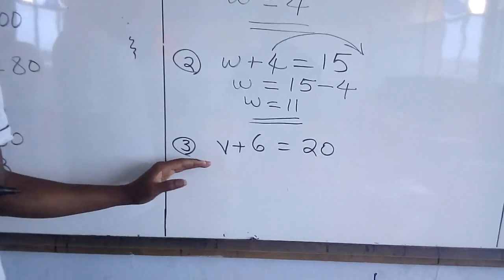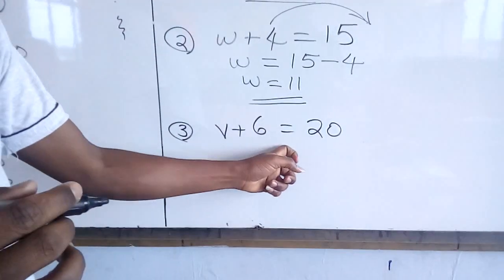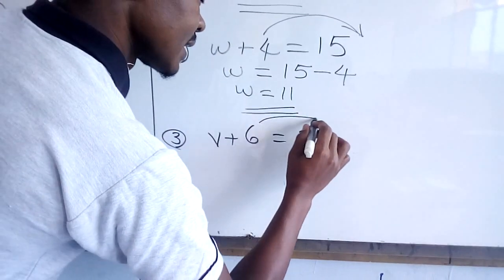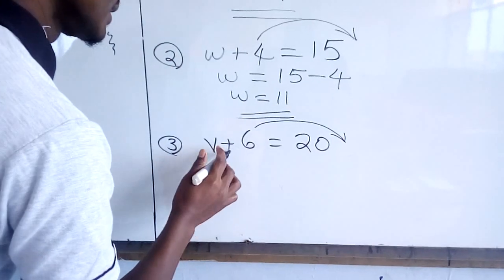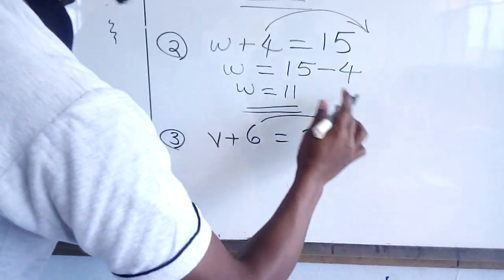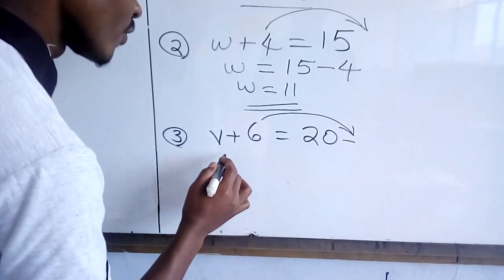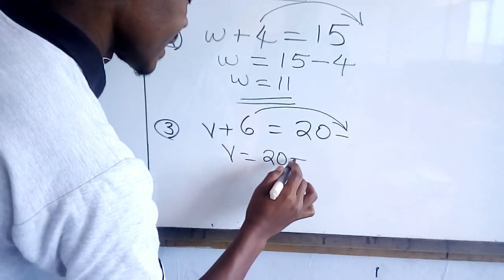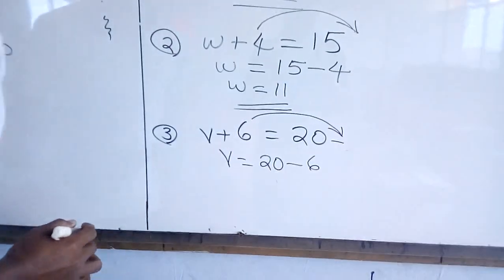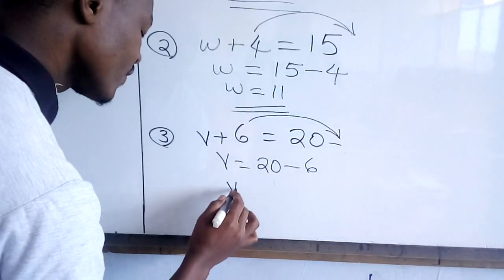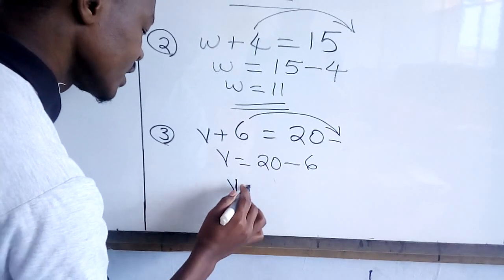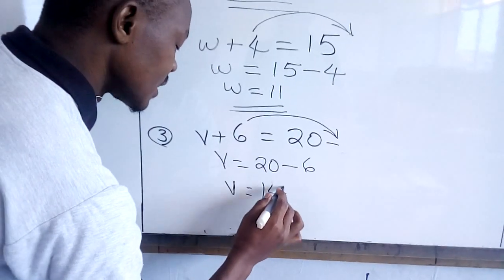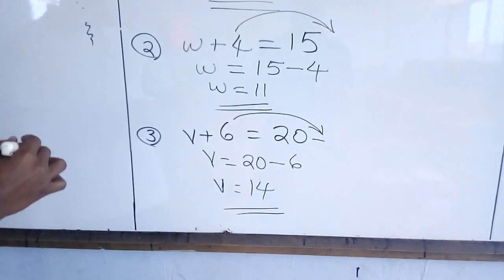Let us look at this other one. We have W plus 6 is equal to 20. What are we supposed to do? Take this 6 to the other side. The moment this sign crosses the equal sign, it becomes a negative. Therefore, we are going to have W is equal to 20 minus 6. Then W is going to be 20 minus 6 — you get 14. Therefore, that is our final answer.